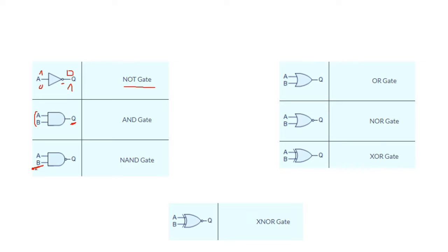This is the OR gate. We have A and B — two inputs — and we have one output. This is the symbol of the OR gate. Here we have the NOR gate — always this circle means NOT. We have a circle here, meaning NOR.